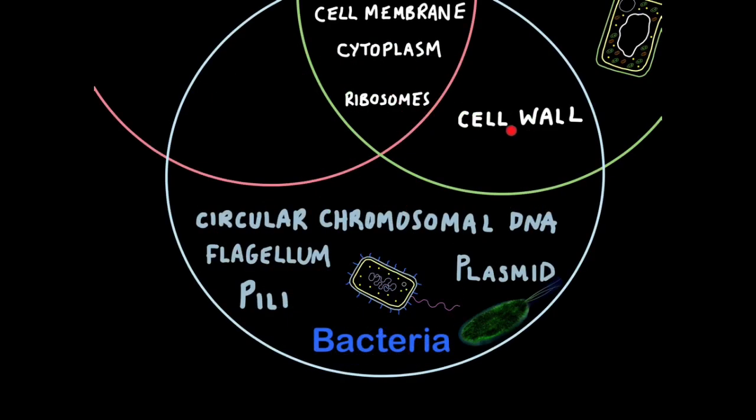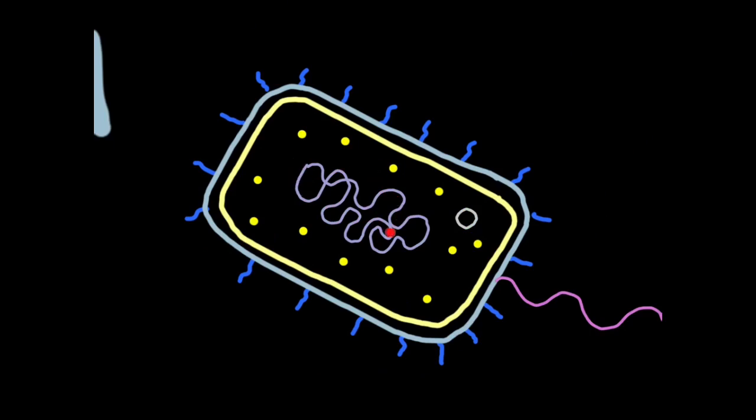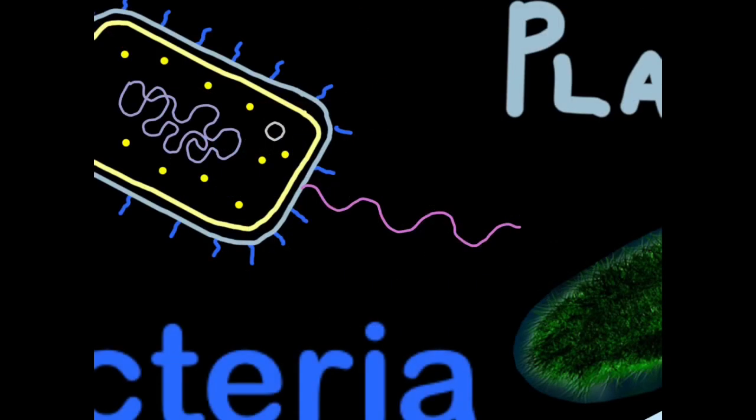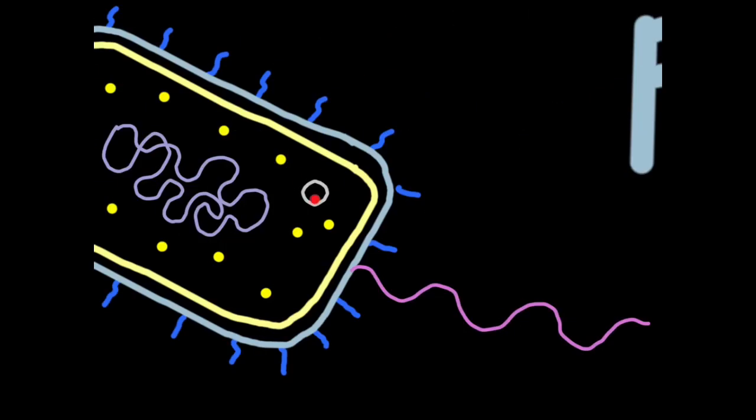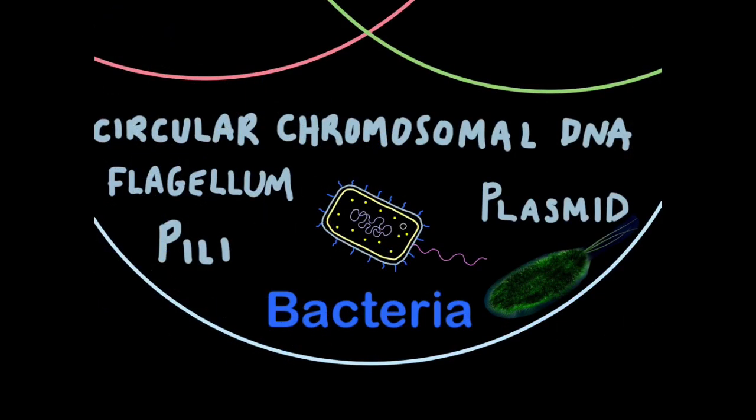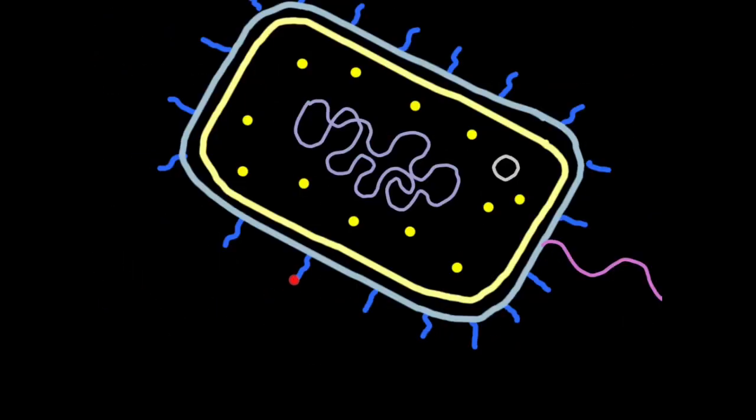So bacteria also have a cell wall, like plant cells, but specific to bacteria, you have circular chromosomal DNA, in other words, a massive loop of DNA, where chromosomes are stitched end-to-end. You have a flagellum, that's a tail-like structure used for locomotion. It comes from the word flagellate, which means to whip. You have plasmids. Plasmids are tiny loops of extra DNA. And you have pili. Pili are delicate tube-like extensions. Bacteria use these to transfer genetic information to other cells.